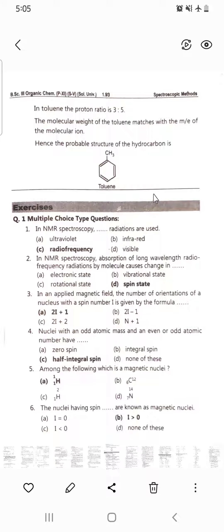Multiple-choice type questions. Choose the correct alternative from the following. These MCQs are based on NMR spectroscopy, that is nuclear magnetic resonance spectroscopy. The first question is: In NMR spectroscopy, which radiations are used?